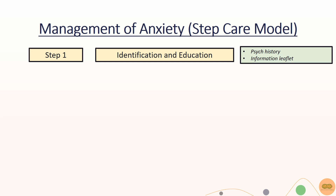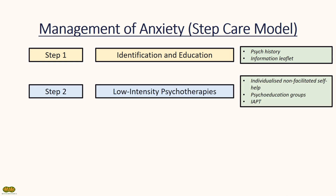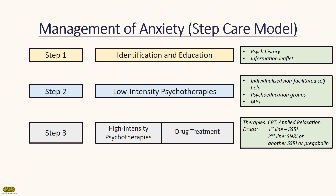NICE guidelines recommend a step-care model for GAD. Step 1 is the identification and education of patients, where patients are made aware of the diagnosis and educated on the condition. Step 2 involves low-intensity psychotherapies, including IAPT — improving access to psychological therapies — individualized self-help or psychotherapy groups. Step 3 includes high-intensity psychotherapies such as CBT (cognitive behavioural therapy), applied relaxation, or drug treatments.